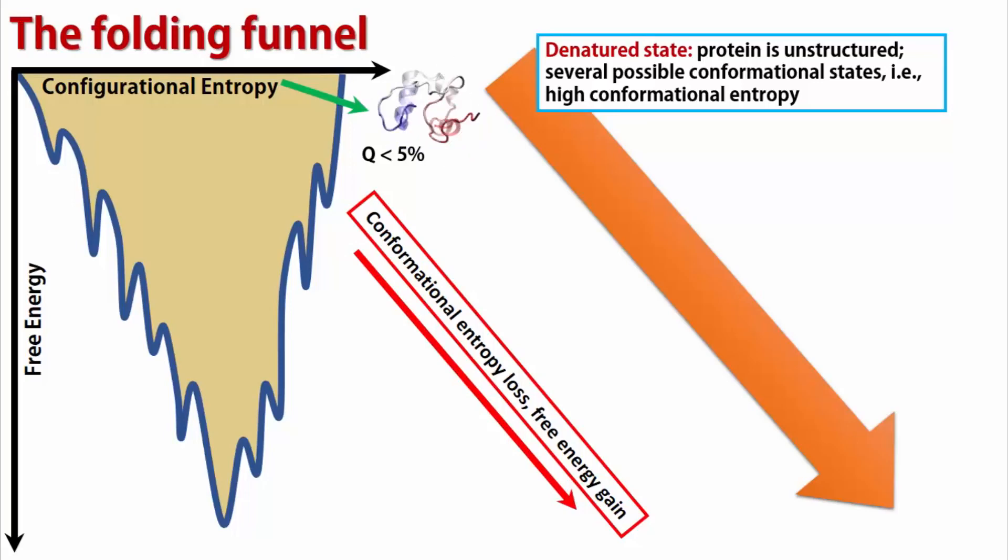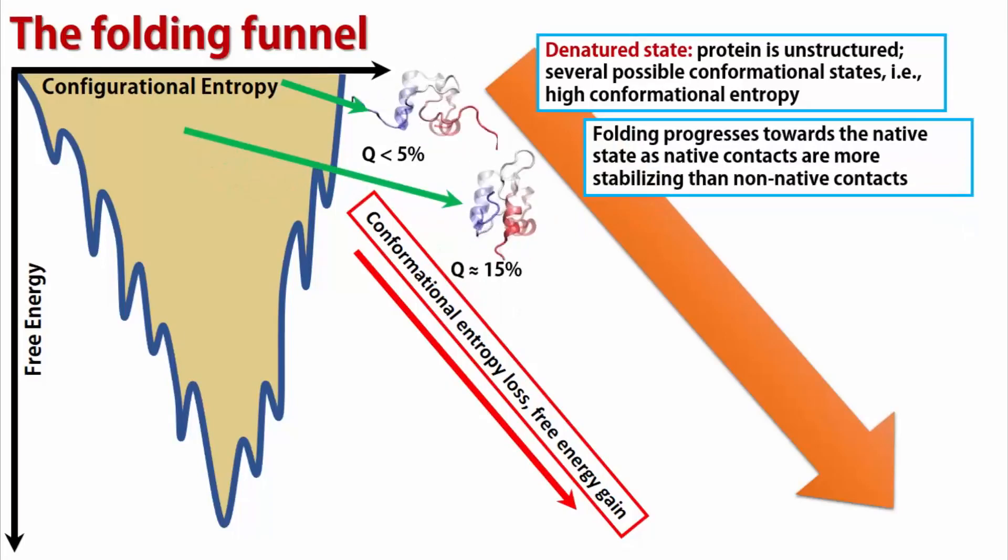Its conformational ensemble includes millions of possible conformations. In this case, we consider the conformational entropy is high. This polypeptide chain progresses downward the folding funnel as native contact formation is spontaneous in nature. As more and more native contacts are formed, the q value, that is, the percent of total native contacts, increases. Disruption of native contacts is, by design, not spontaneous. So, as the q value increases, in terms of probable conformations, the protein has lesser and lesser options. It can only proceed downwards to increase the q value even more. This is why downward the folding funnel, the protein loses its conformational entropy.